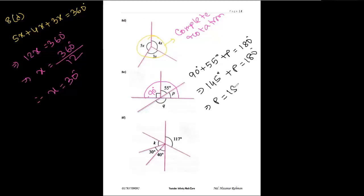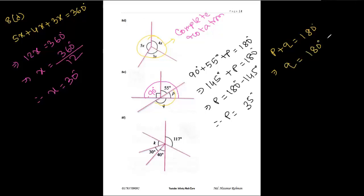The value of p equals 180 degrees minus 145 degrees, which is 35 degrees. Now we need to find the value of q. We can say p and q together make 180 degrees — they are supplementary angles. So q equals 180 degrees minus p, that means 180 minus 35. Subtracting 35 from 180, we get 145 degrees. That is the answer of 8e.